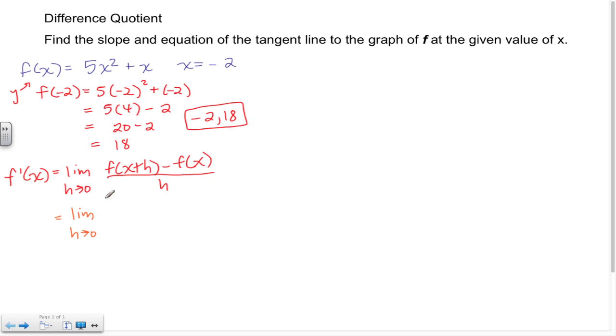Anywhere there's an x it needs to be replaced with x plus h. So 5 times x plus h quantity squared plus x plus h minus, I have two terms, well minus the original function I have two terms, so I need to use parentheses. So that's going to give me 5x squared plus x, and again everything here is divided by h.